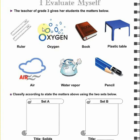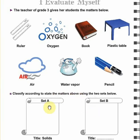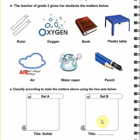The teacher of grade 3 gives her students the matters below: ruler, oxygen, book, plastic table, air, water vapor, and pencil. We are going to classify them according to the state of matter using the two sets below. We have Set A and Set B.